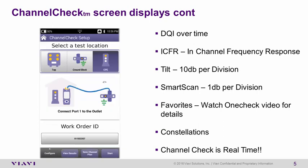We've now completed our measurement for this channel. We can certainly save off this channel plan if we want to utilize it further in the network or to compare from one location to another — such as making a measurement outside the subscriber's home at the tap and then measuring inside the house. If a channel trap is taking out a channel behind a wall plate, that would be identified by the channel missing in the channel plan. The ability to save off the channel plan was also available in OneCheck mode.